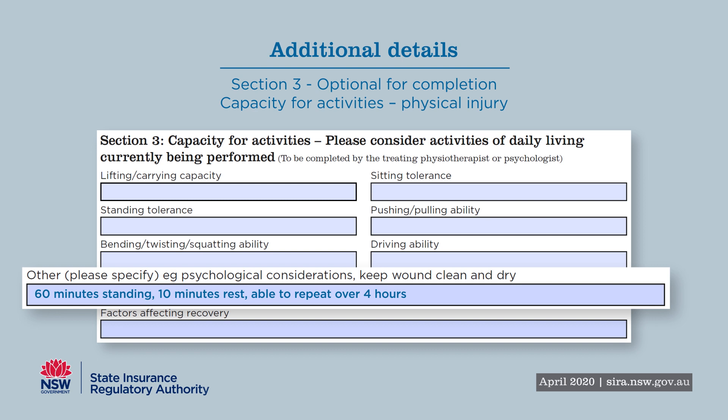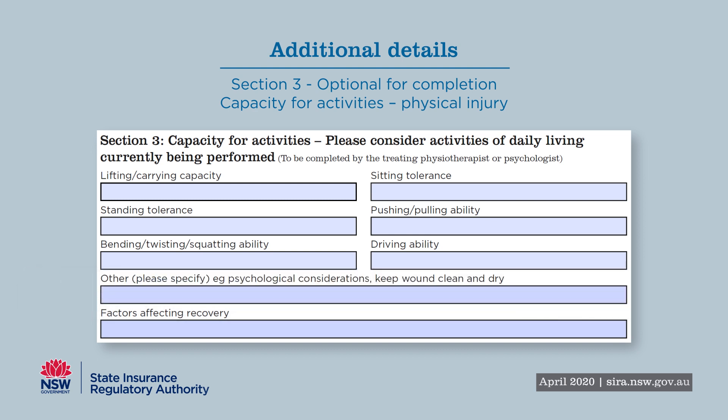We will now look at how this section is completed for a person with a psychological injury. In this example, Jasmine has anxiety with underlying depression, which is triggered due to conflict with her line supervisor. Her condition has raised concerns regarding her concentration. Jasmine lives 10 minutes from her workplace and often takes the bus as she does not like to drive. Again, it is essential to accurately quantify her capacity using repeatable, reliable measures.